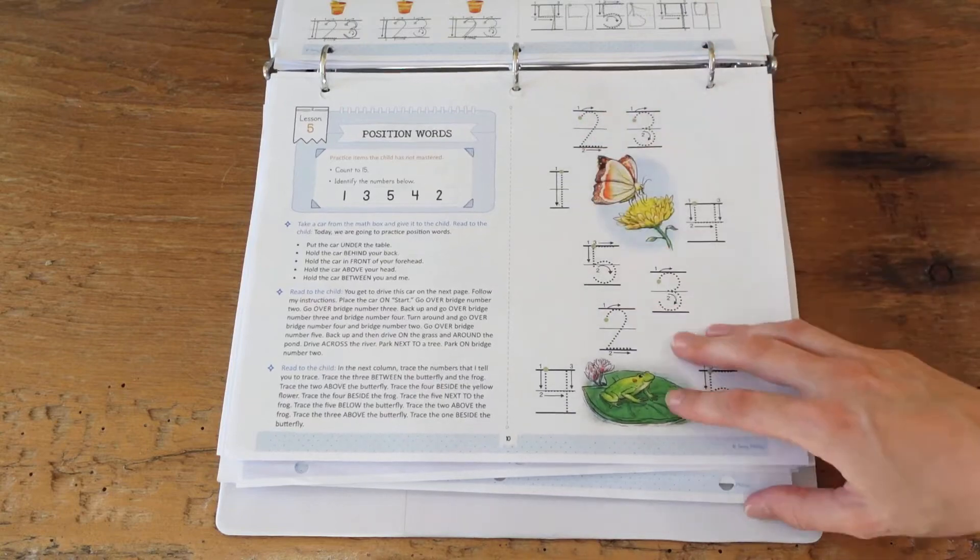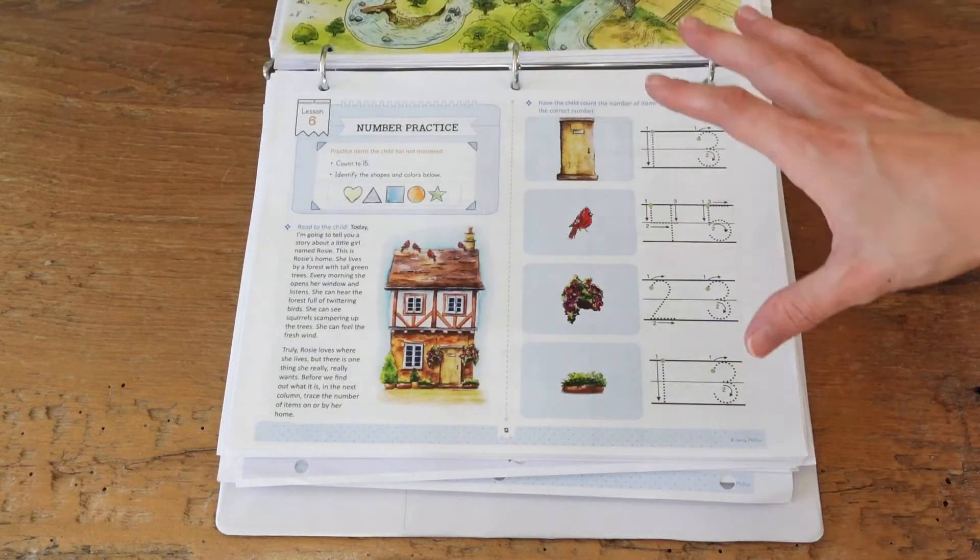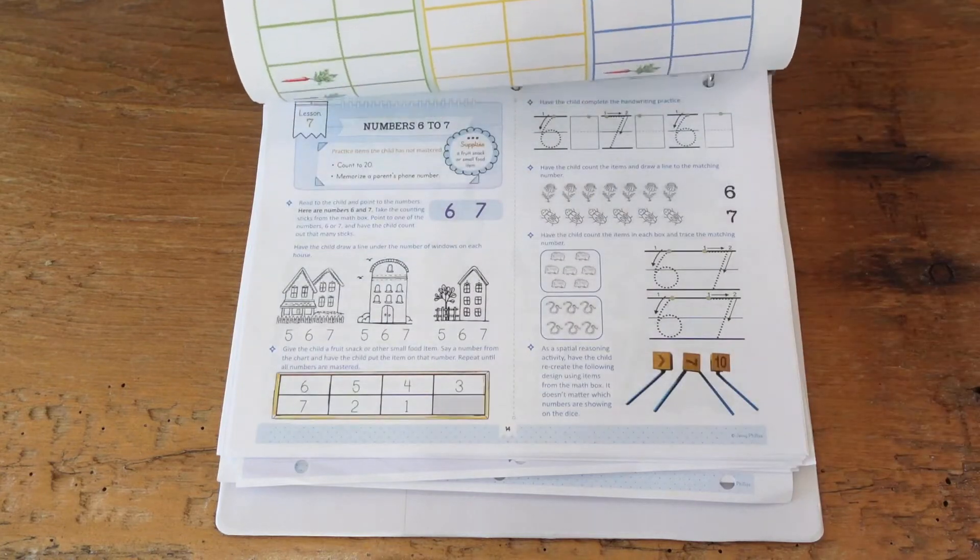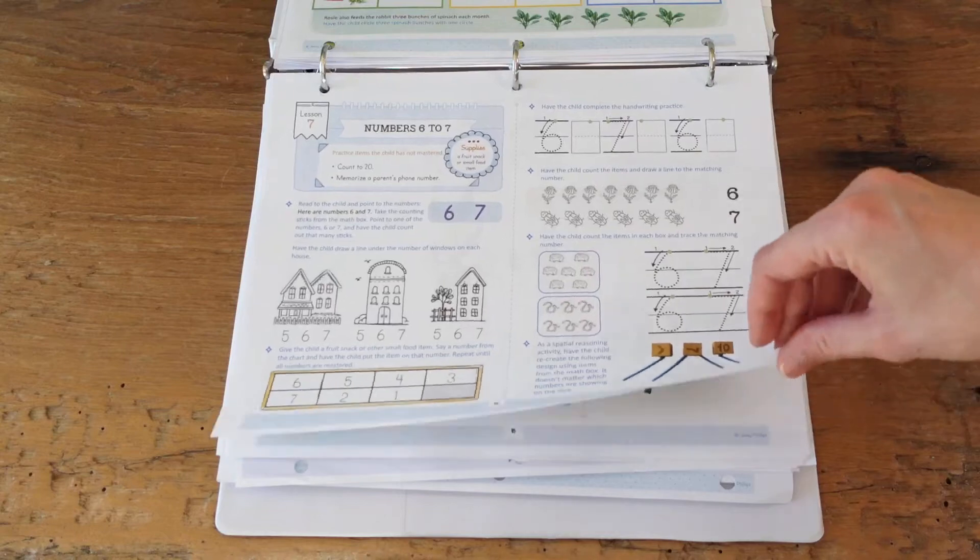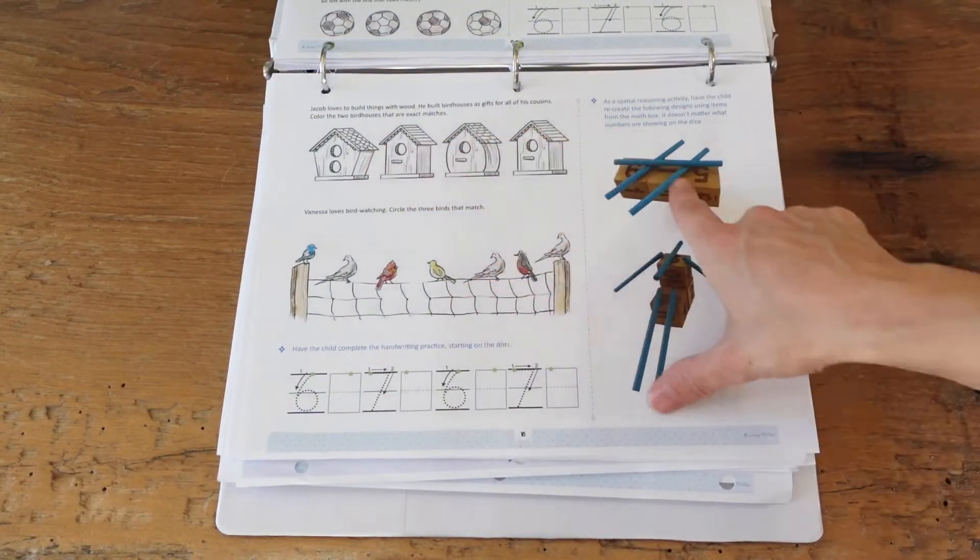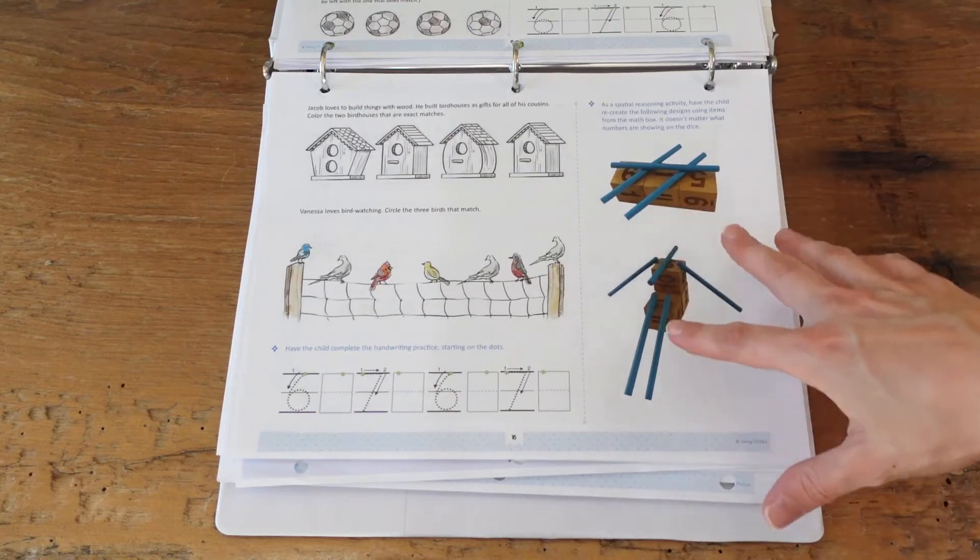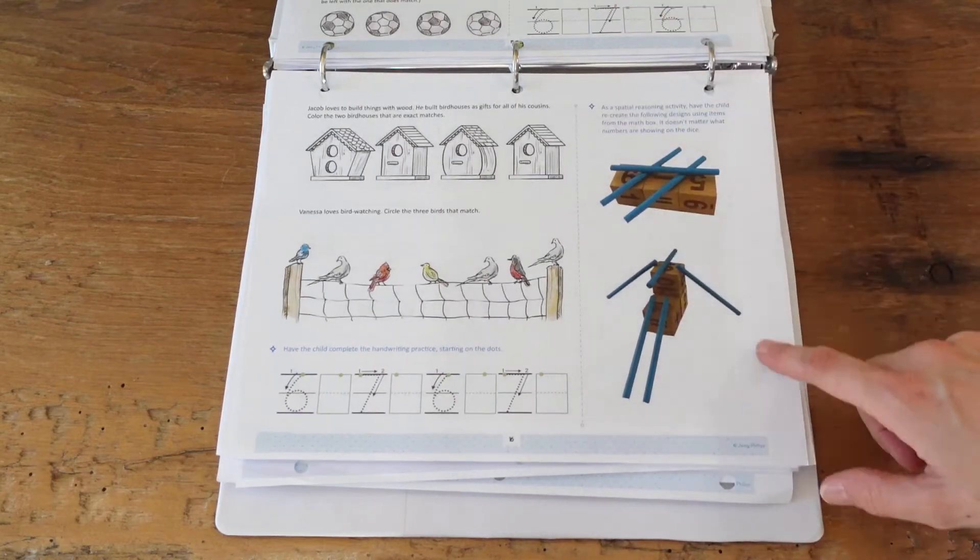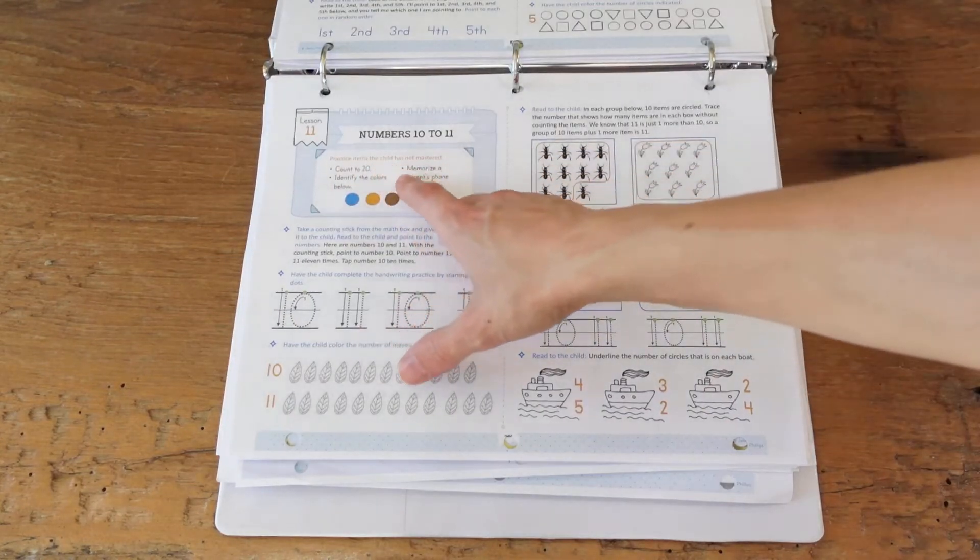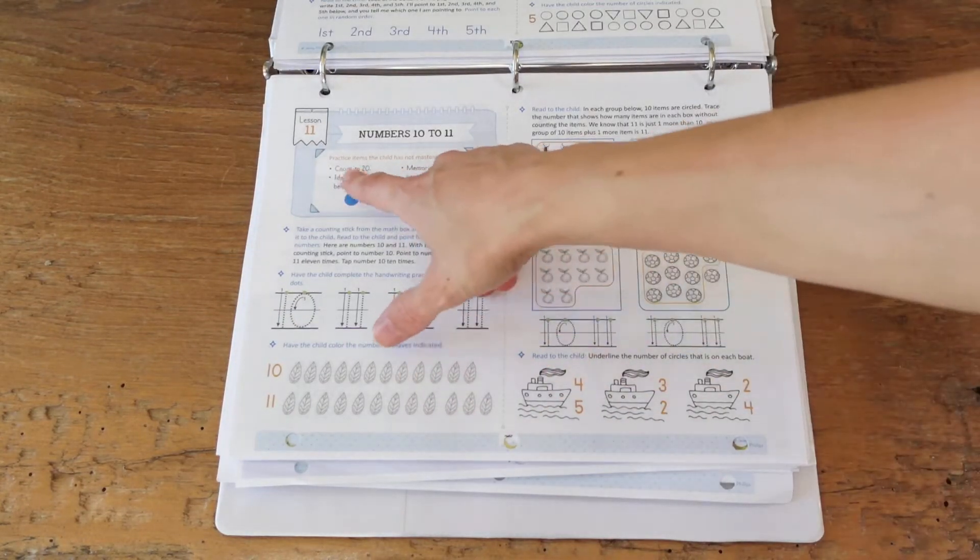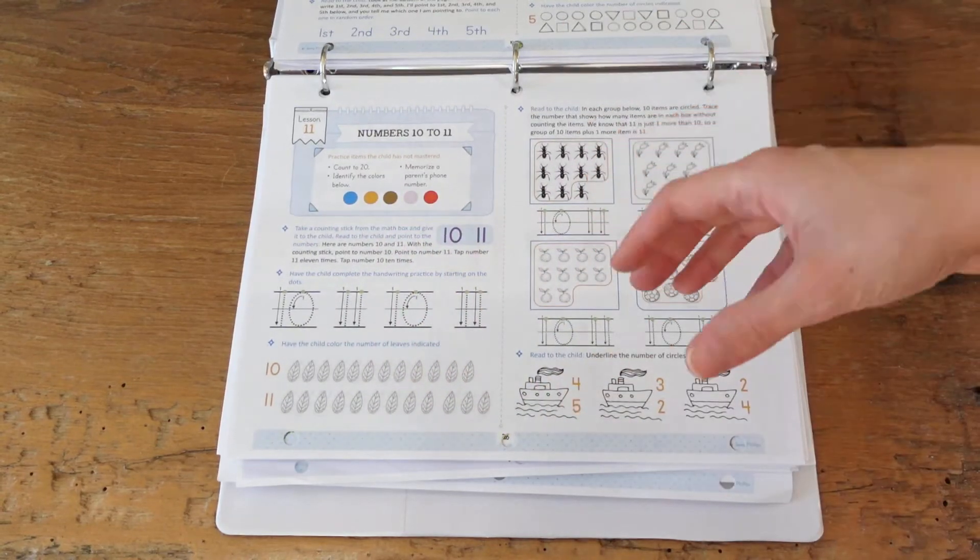But it's very simple, very gentle and I love how sweet it is. There's a lot of activities, the illustrations are beautiful, there's poetry throughout, some really fun activities. Lesson 7 has fun little bird activities and I also love how they do spatial reasoning activities which is really important for this kindergarten year. And on each lesson it's going to have practice items the child has not mastered yet so you have to count to 20, identify the colors below, memorize a parent's phone number and things like that.